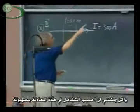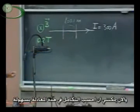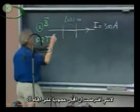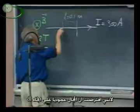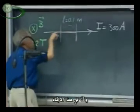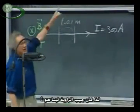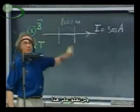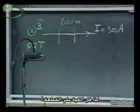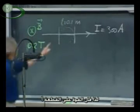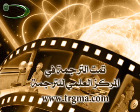Now I can integrate that equation very easily, because I've assumed the magnetic field is constant. The magnetic field is perpendicular to the direction dL, so the sine of theta is one and I don't have to worry about that. So I simply get that the force on this section is...